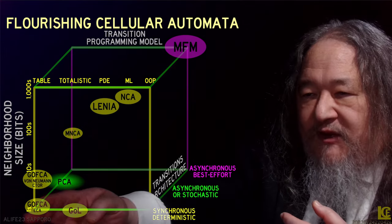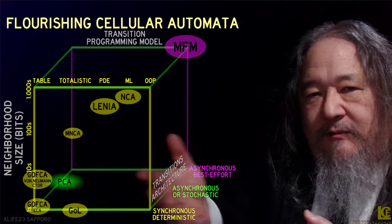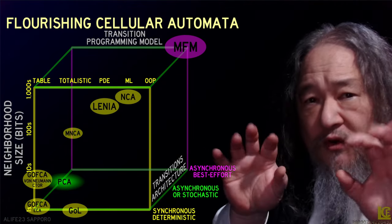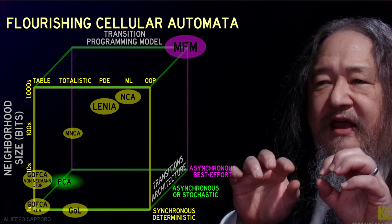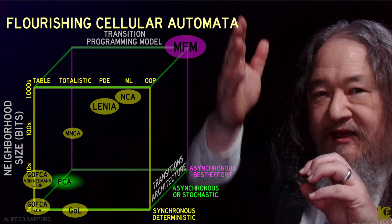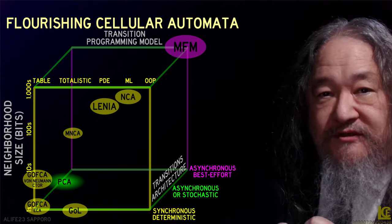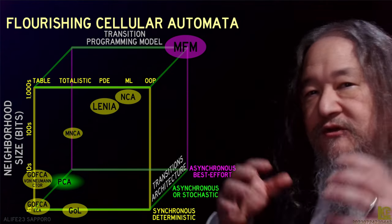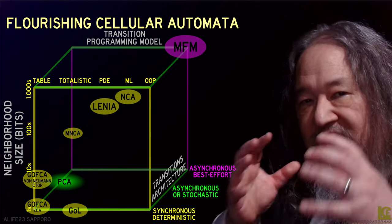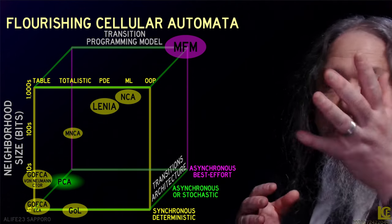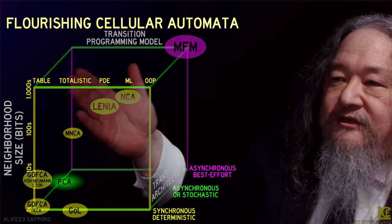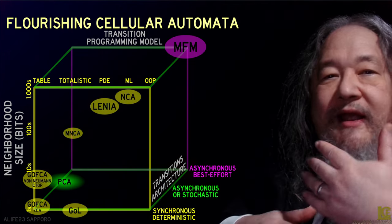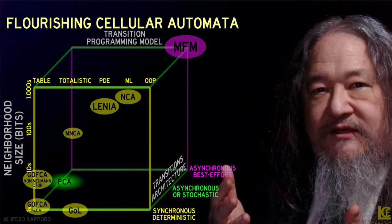We're back at the beginning, way down in the corner with the elementary CAs, where you have just a couple of bits of state total in the neighborhood, including yourself. It's so small that you could make a table of all possible values of the input and the corresponding output. As we move up from there to having more and more total state in a neighborhood, that table quickly becomes impossible. So there are all these alternate approaches to figuring out ways to implement the state-to-state transition.